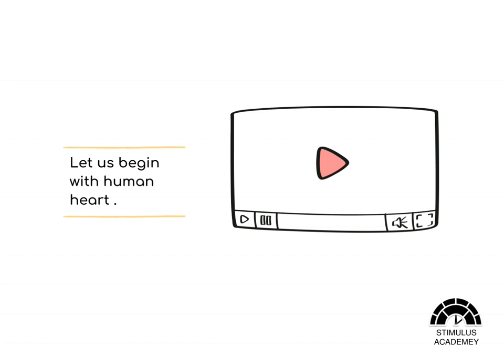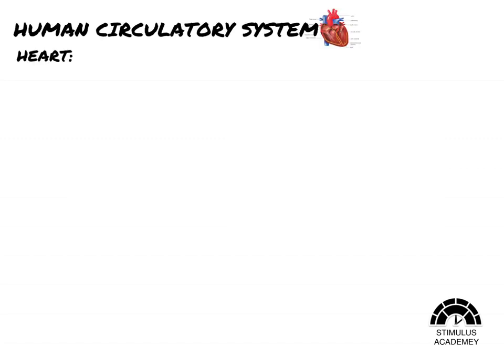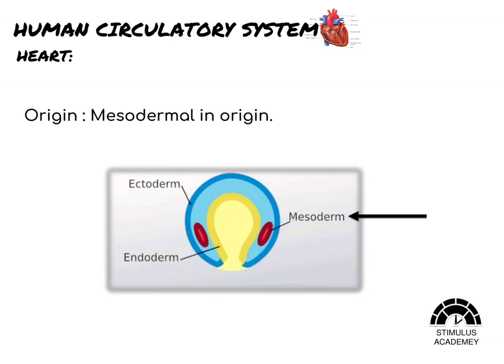Now let us begin with the human heart. When we talk about an organ inside the body, we describe it under certain common headings like origin, location, position, size, and more. The heart is mesodermal in origin, which relates to embryological development. The three layers present in the embryo — ectoderm, endoderm, and mesoderm — are responsible for the formation of all body parts. So every tissue, organ, and organ system has an origin of ectoderm, endoderm, or mesoderm.